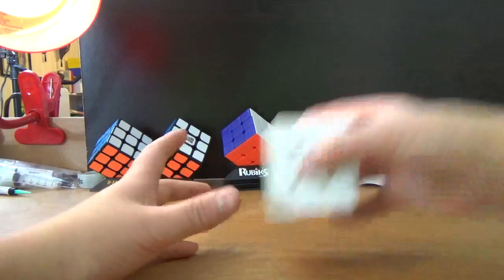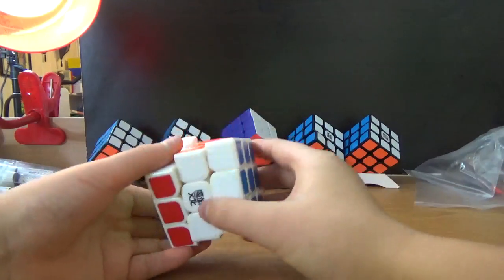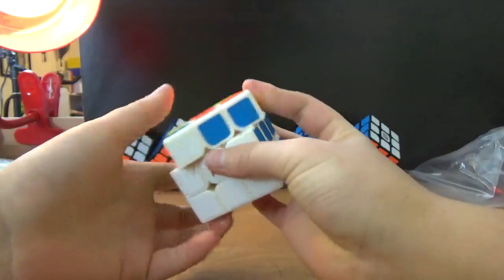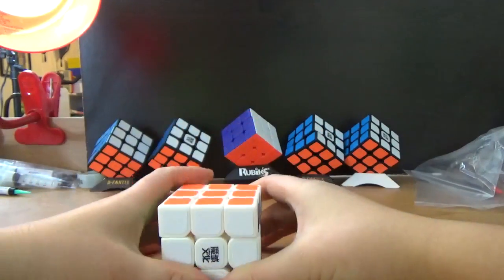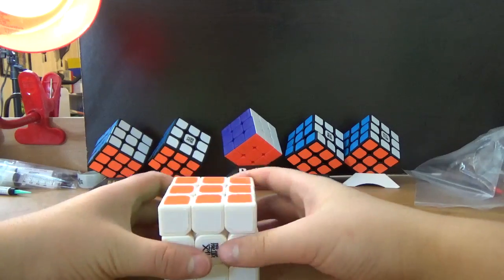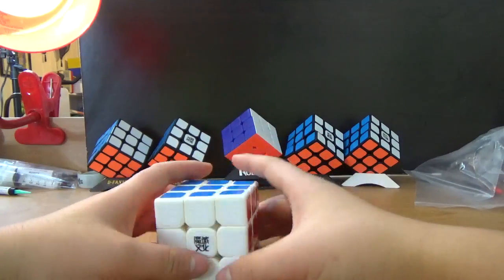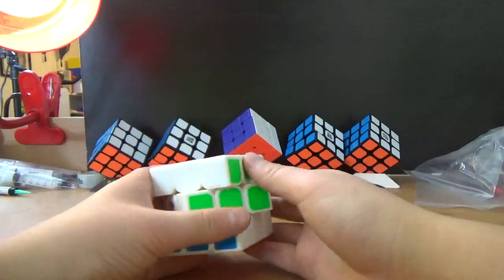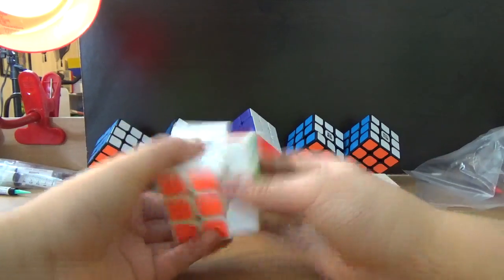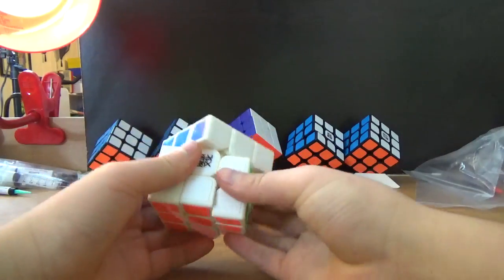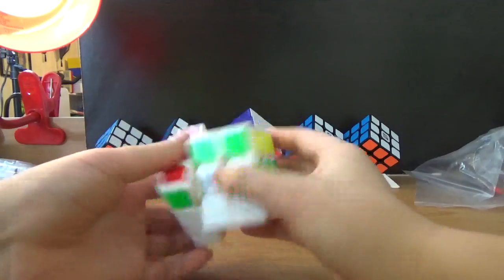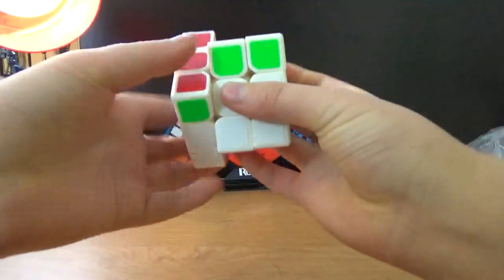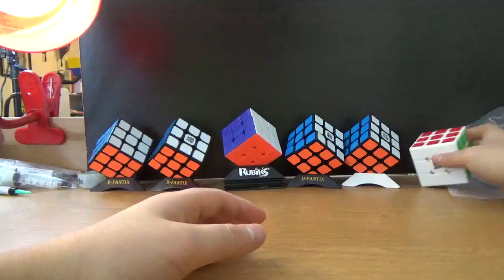This is the white Moyu Aulong. I really like the colors, like the color scheme of the Moyu Aulong. This is probably going to be one of my main speed cubes just because of how fast it moves, how it corner cuts, and how fast I can do stuff on it. Overall, pretty good cube. Let's move on.